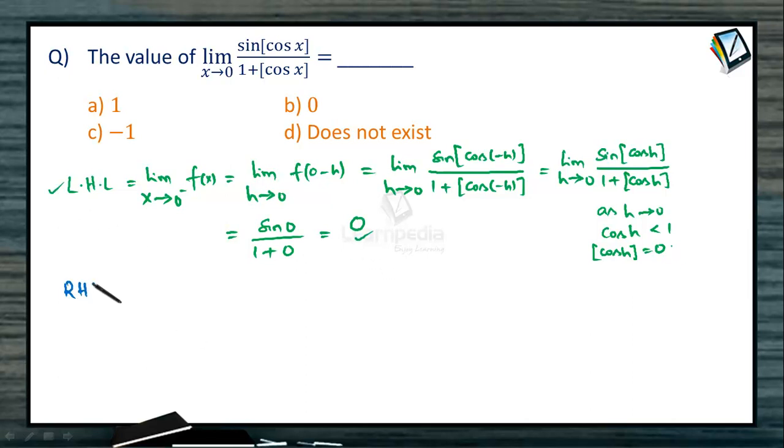Now let's find the right hand limit of the function. That would be lim(x→0⁺) f(x), which by definition is lim(h→0) f(0+h). This is again lim(h→0) sin([cos h]) / (1 + [cos h]).